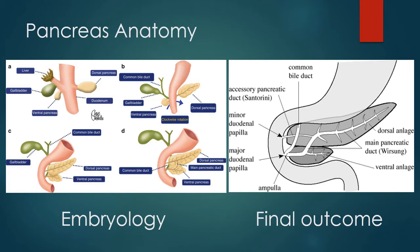In most cases, the pancreatic duct from the dorsal pancreas fuses with that of the ventral pancreas to form the main pancreatic duct. The Santorini duct in the head region distal to the fusion remains as a small channel and opens at the minor papilla. Entire pancreatic and biliary secretions gain access to the duodenum by way of the ventral pancreatic duct at the major papilla.